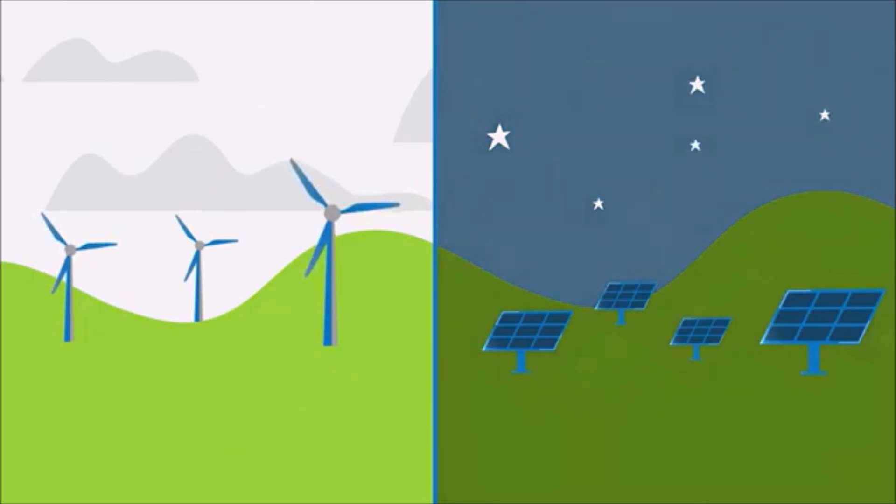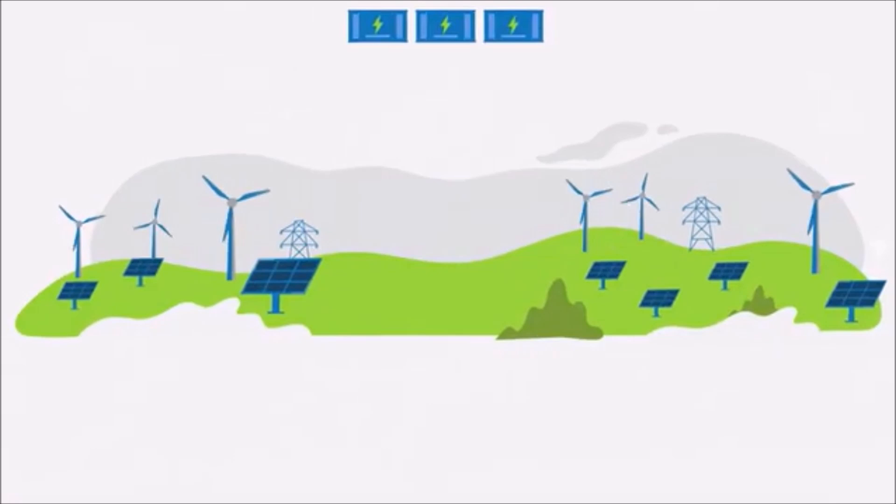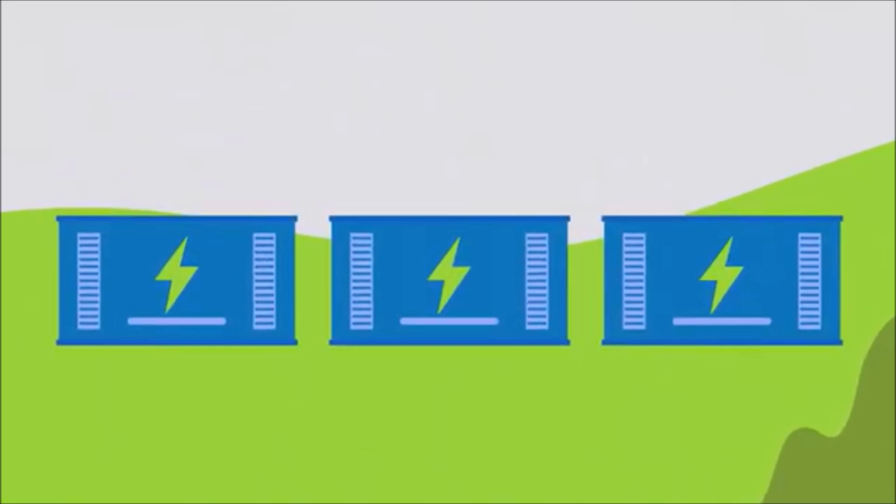Sometimes generation drops and sometimes green energy sources produce more electricity than the local transmission lines can handle. To make the most of renewables at all times we need to smooth out the energy output so that we're not wasting power.